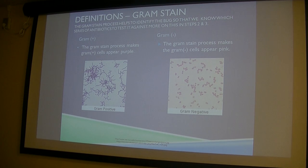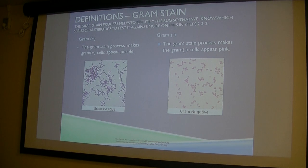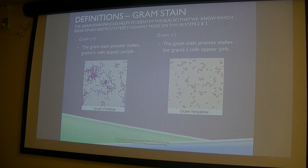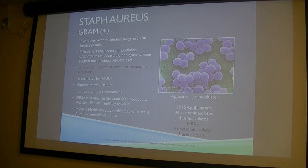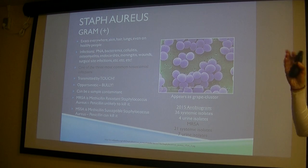If we're not getting gram stains back promptly, we need to talk to the lab and figure out if there's something we can do to help. The gram stain in conjunction with the differential based on the patient's symptomology is what steers us toward our empiric antibiotics. That's what we need to be looking at.